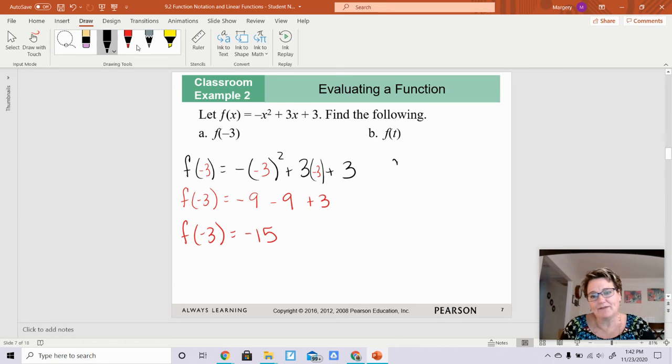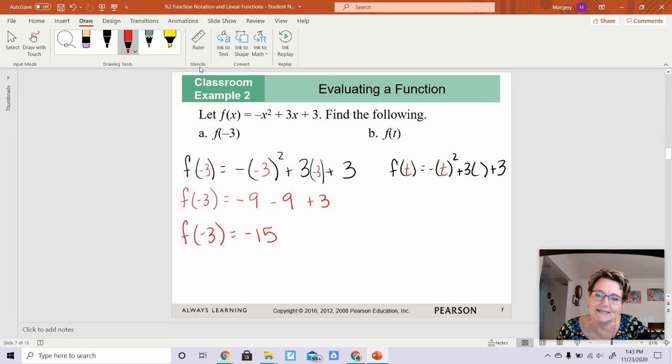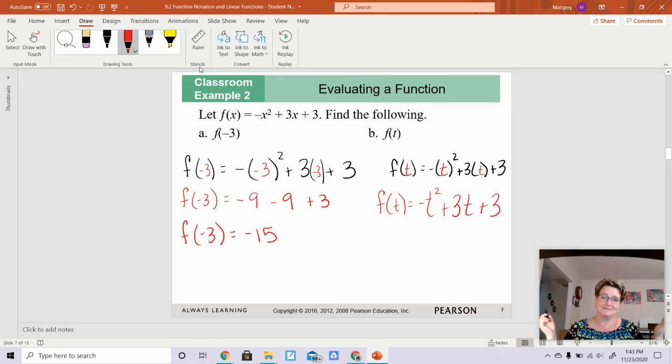The next one. We have f(something) equals negative something squared plus 3 times something plus 3. Now on this one, they're telling me that x is actually the letter t. So wherever x was, I'm going to put in a t. So I'm going to get f(t) equals t squared times a negative is negative t squared. 3 times t is positive 3t. And then plus 3 on the end. And that's it. Can't do anything else.